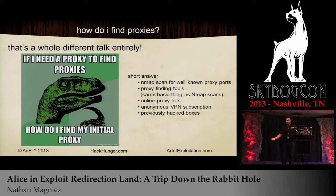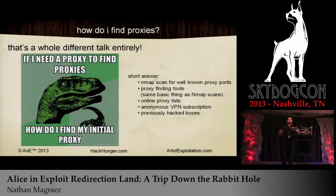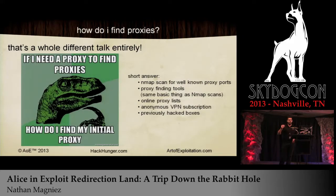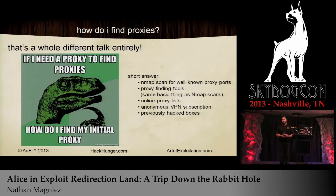You need an initial proxy. If you don't want to be logged, how do you find one? At some point you're going to have to take that risk. Someone's going to have your IP address at some point — that initial connection is going to have your actual information. The short answer to finding proxies is to nmap scan them. There are proxy-finding tools, online proxy lists, anonymous VPN subscriptions, and previously hacked machines that no longer serve a purpose for you.